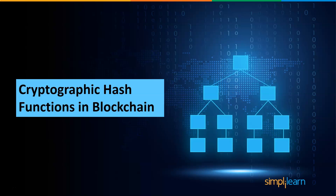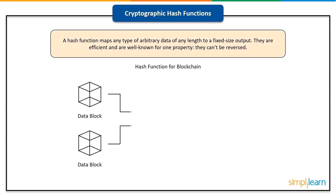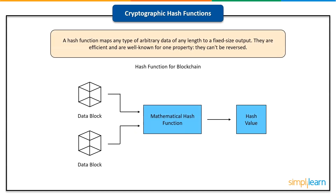Since hash is a big part of Merkle tree, let's dive down and look at some cryptographic hash functions. A hash function maps any type of arbitrary data of any length to a fixed size output. It is commonly used in cryptography. Hash functions are known for one key property: they can't be reversed. It's a one-way function that's only meant to work in one direction. Message Digest, Secure Hash Function, and RIPE Message Digest are some of the hash families available.